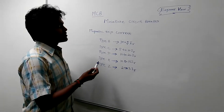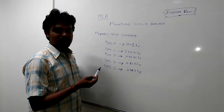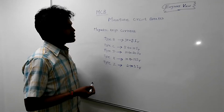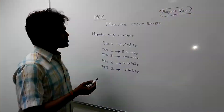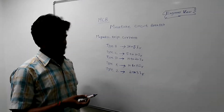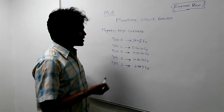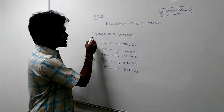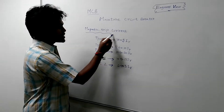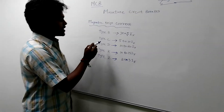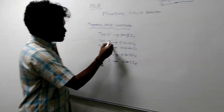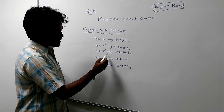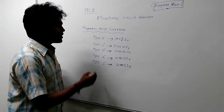The next question is how MCB works and what are the different MCB types. MCB is a magnetic trip current based device. The main MCB types are Type B, Type C, Type D, Type K, and Type Z.